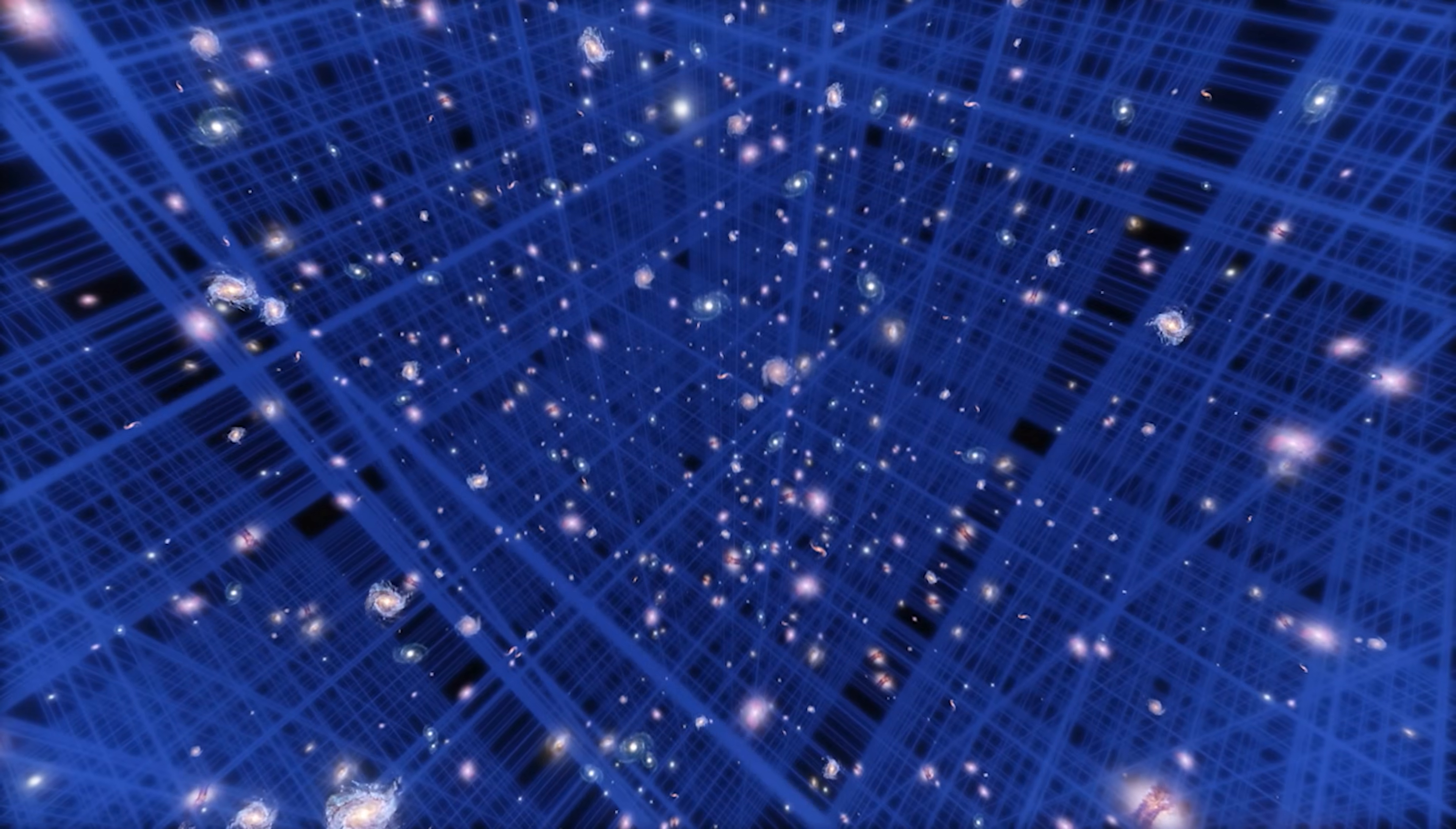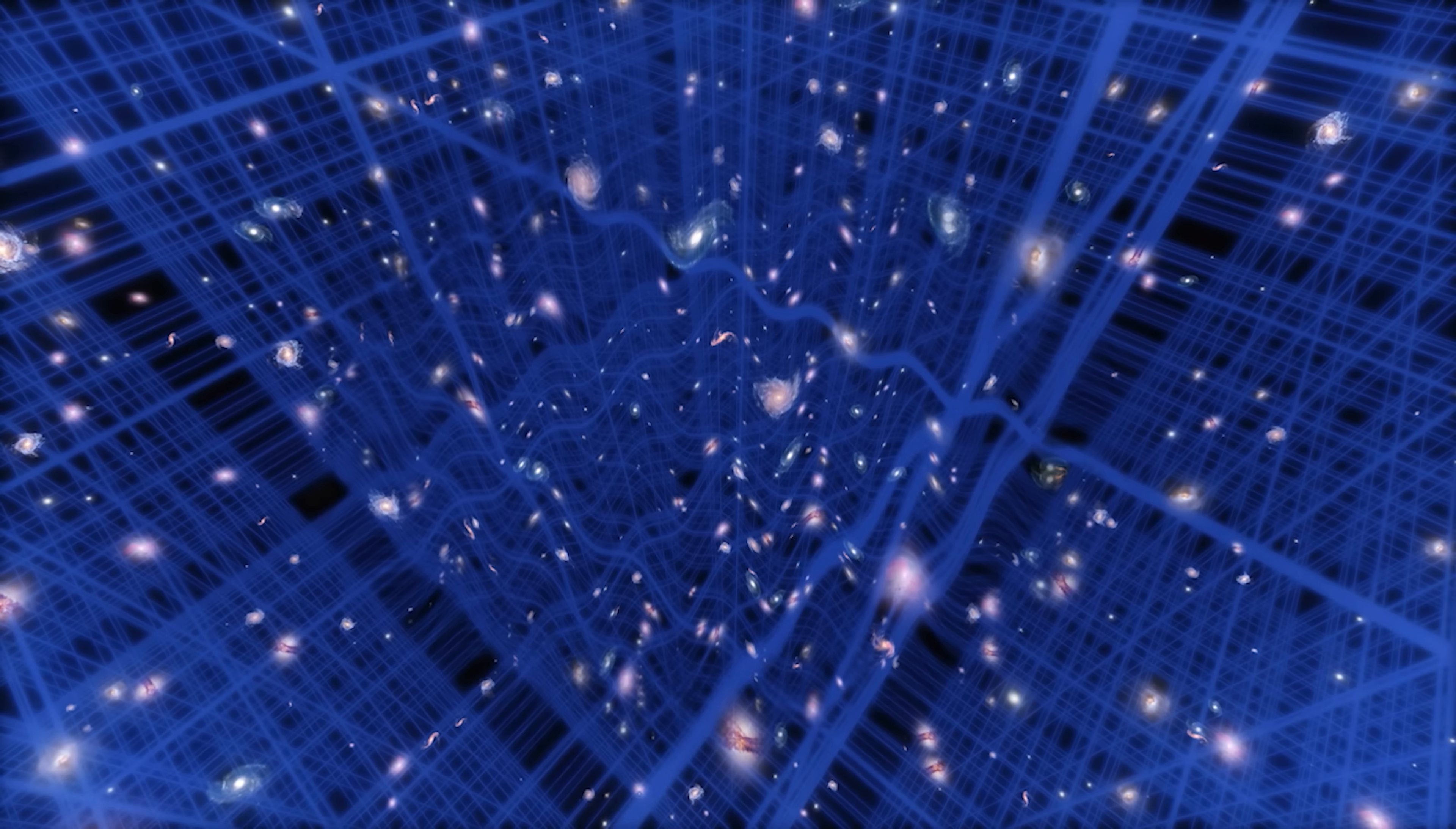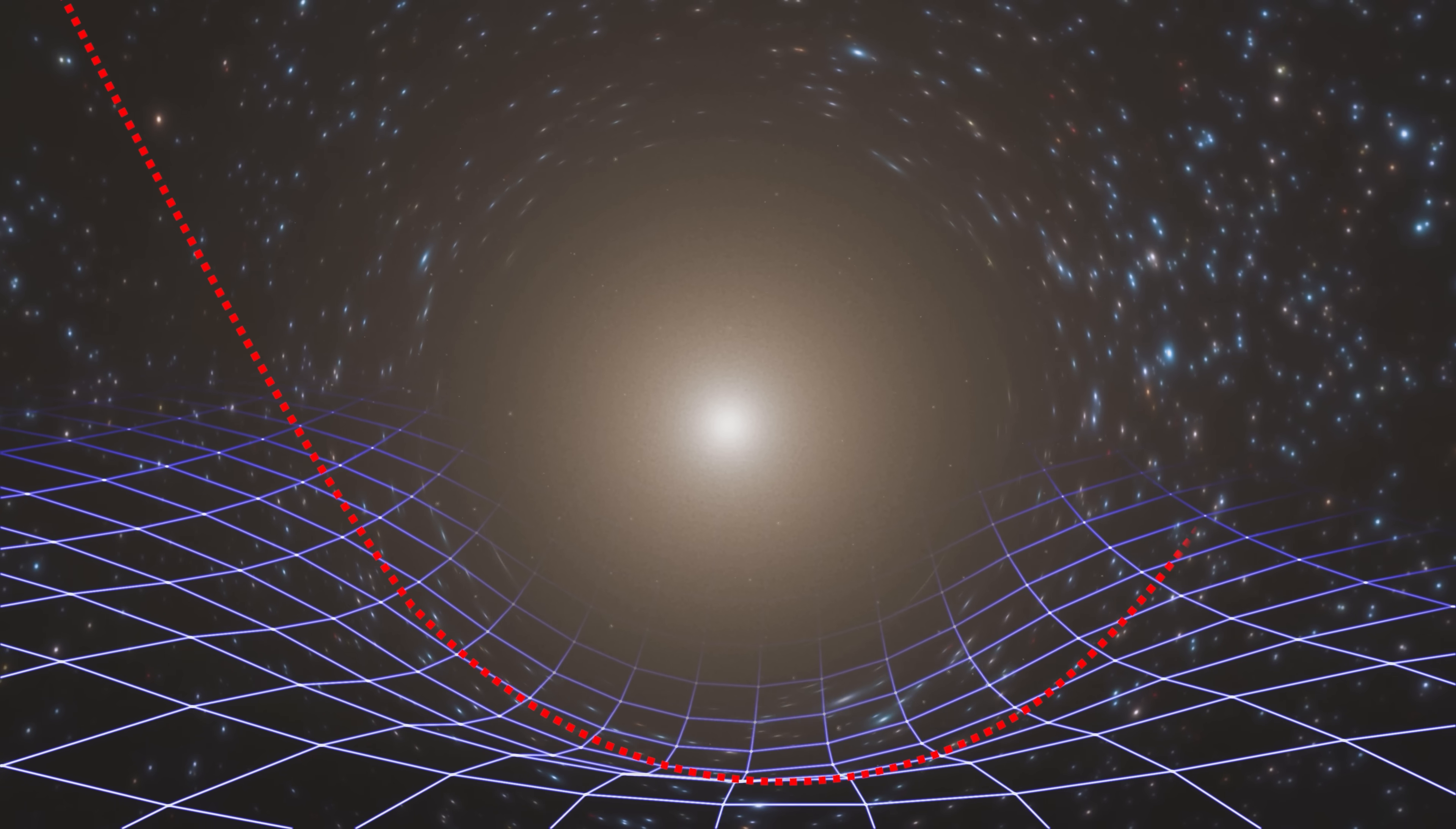Einstein's theory of general relativity gives us a lens through which we can understand this strange behaviour. In general relativity, space isn't just some background in which other things can move around. Instead, space itself can stretch and warp and evolve over time. Einstein showed that in this framework gravity is no longer a force, but rather a distortion of an object's inertial path in a dynamical space-time.